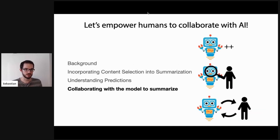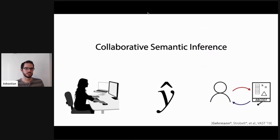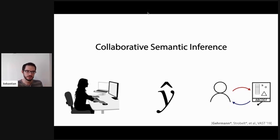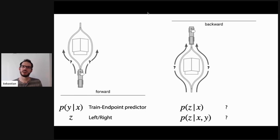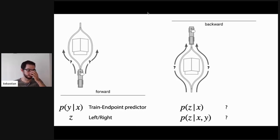Inference-time interventions also allow us to collaborate with the model to summarize. We call this collaborative semantic inference. The use case is Jesse who wants to shape the summarization decision as an end user. We do this using a model that has an interpretable hook — a lever — built into it that Jesse can control. Consider a simple train endpoint predictor: a train at position X, and we predict where it ends up. The predictor makes a latent decision of whether the train goes left or right, which we can't observe from the output alone — exactly like a black box neural model where you have input and output but no idea what's happening in the middle.